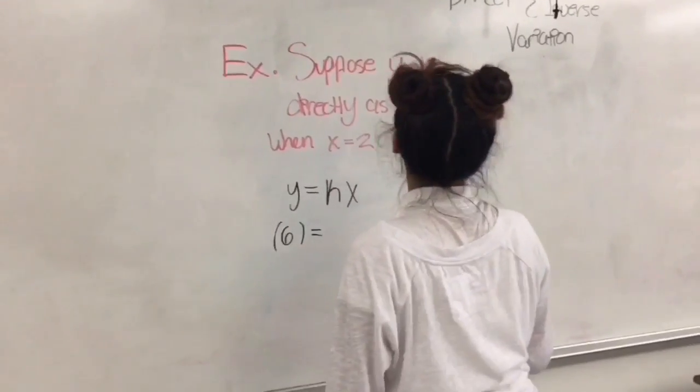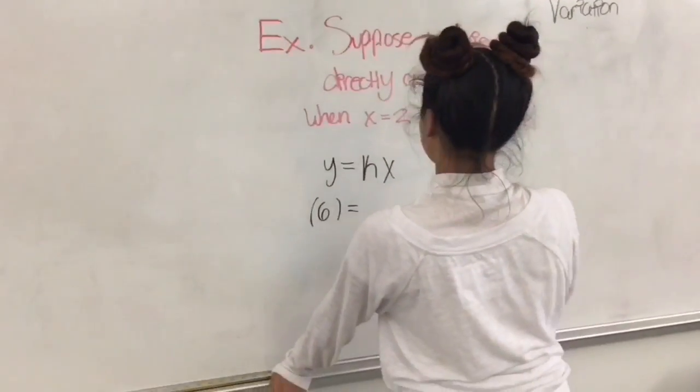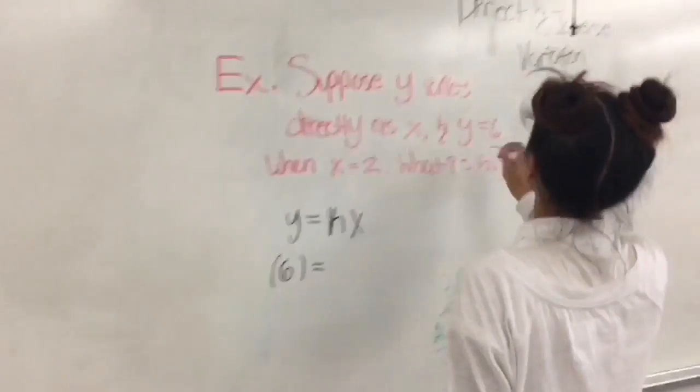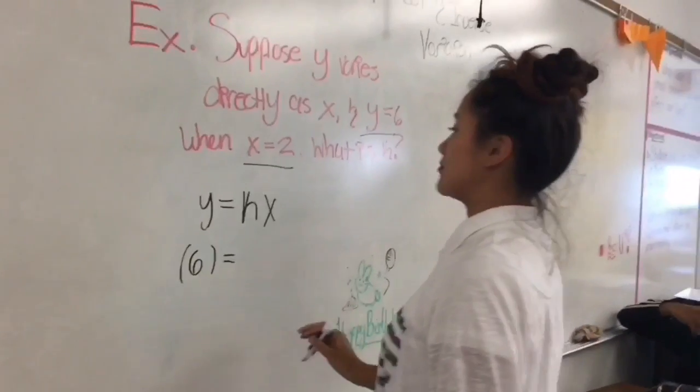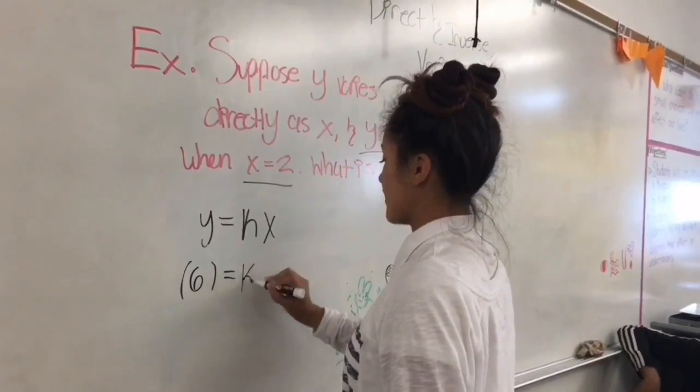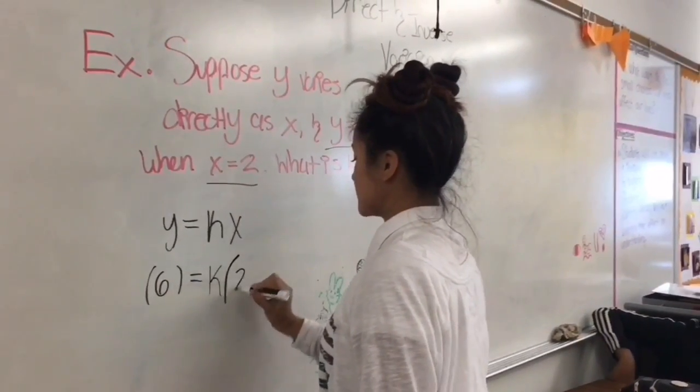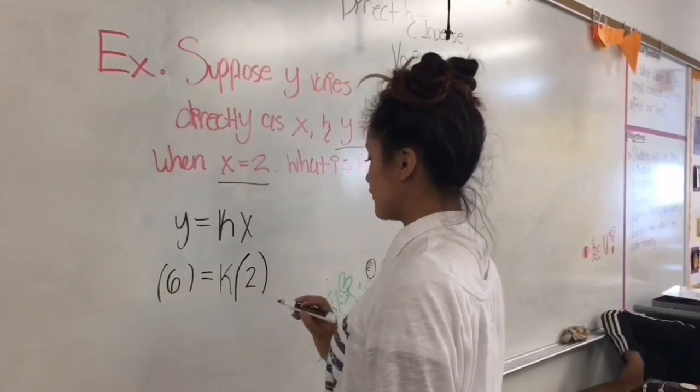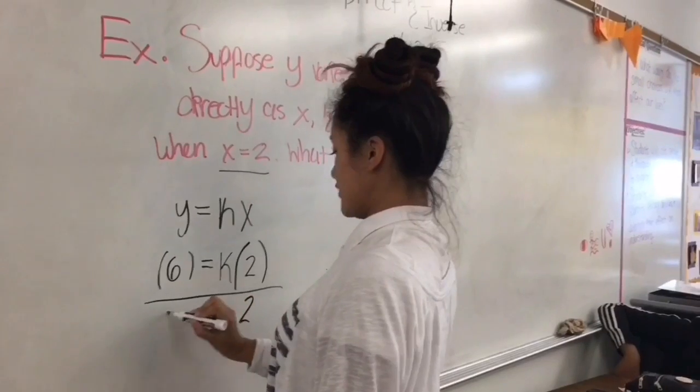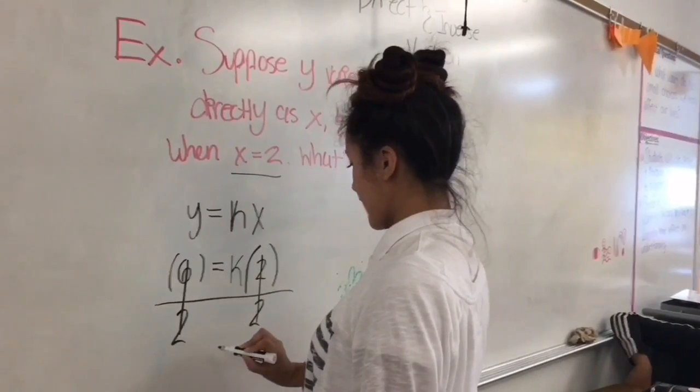Can you explain your answer? I'm not done yet. Explain your process going through it. Okay, so we start off with the formula first, and then since y equals 6 and x equals 2, I'm going to plug in 6 for y. And then we don't know what k is, so we leave that as a variable. And then x equals 2, so we substitute in 2 for x. And then to get k, we have to isolate the variable. We divide both sides by 2. k is 3.